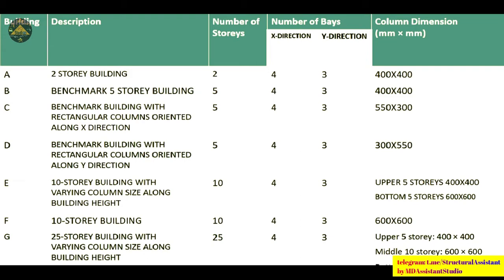Rectangular columns oriented along X means the longer dimension is parallel to X. In the fourth case, same 5-story building but columns oriented along the Y-direction — meaning 550 mm is parallel to the Y-axis. The fifth building is a 10-story building with varying column size along the height: upper 5 stories have 400 by 400 columns and bottom 5 stories have 600 by 600. This is a practical case, as earthquake forces and axial loads due to dead and live load are maximum at the bottom, so structural engineers increase column size in lower stories.